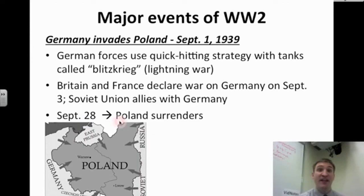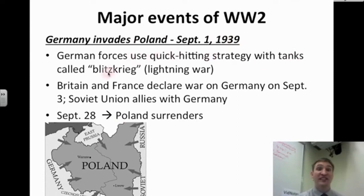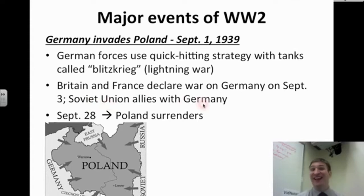First, Germany invades Poland on September 1st, 1939. This starts the war. German forces use a quick-hitting strategy with tanks called the Blitzkrieg, which is German for 'lightning war.' Britain and France declare war on Germany two days later, September 3rd. The Soviet Union then allies itself with Germany, the Nazis, and Hitler. And on September 28th, Poland surrenders to the Nazis and Hitler.